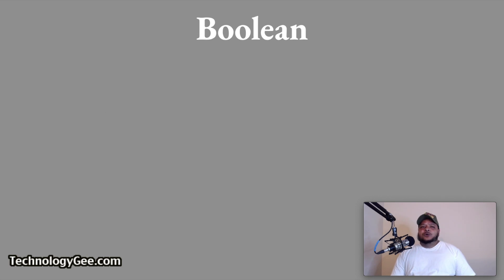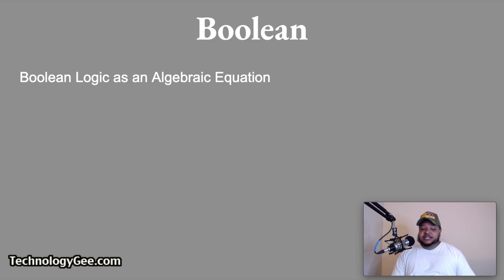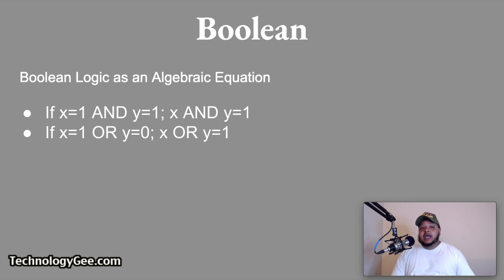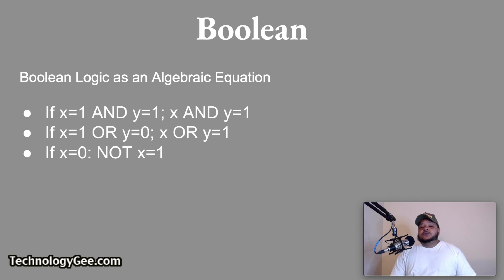Boolean can also be applied as an algebraic equation. If X equals 1 and Y equals 1, then X AND Y will equal 1. If X equals 1 or Y equals 0, then X OR Y will equal 1. If X equals 0, then NOT X — X will not equal 1.